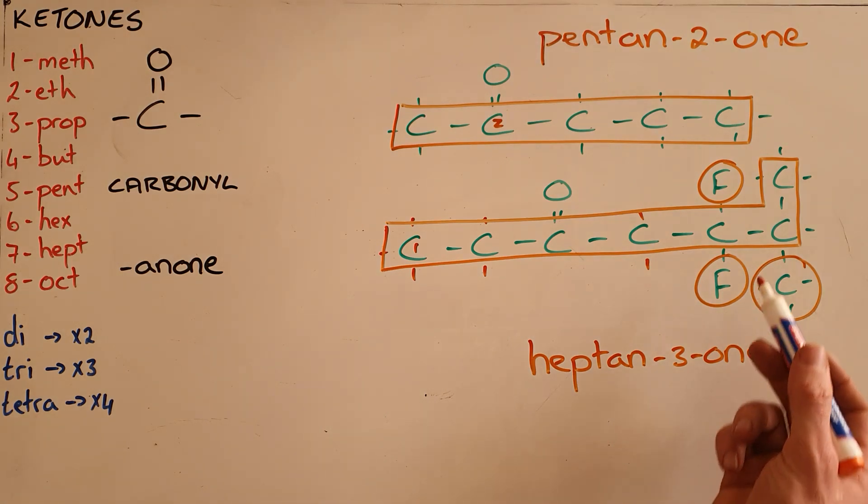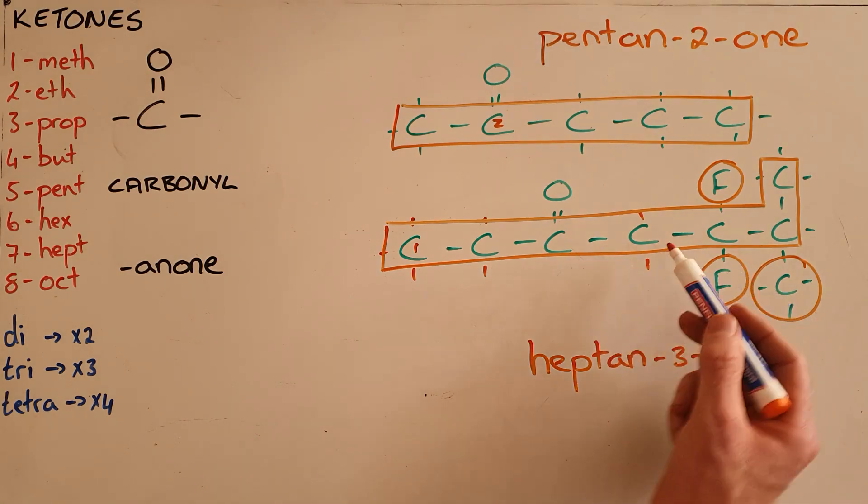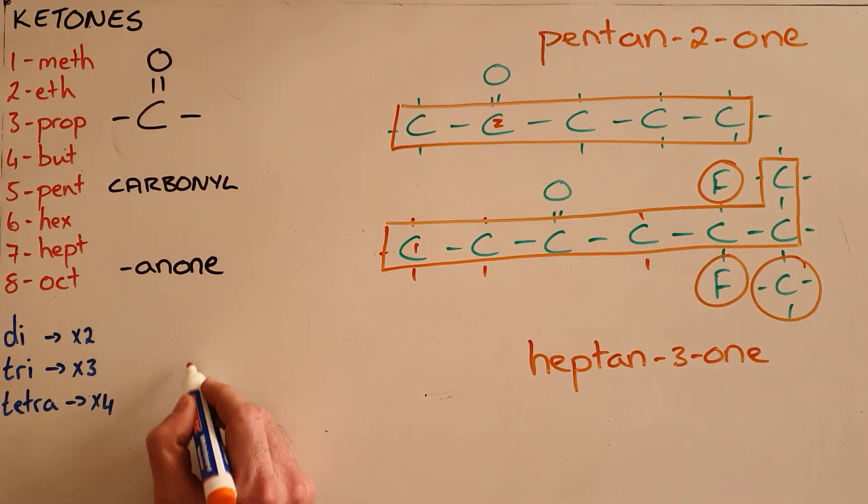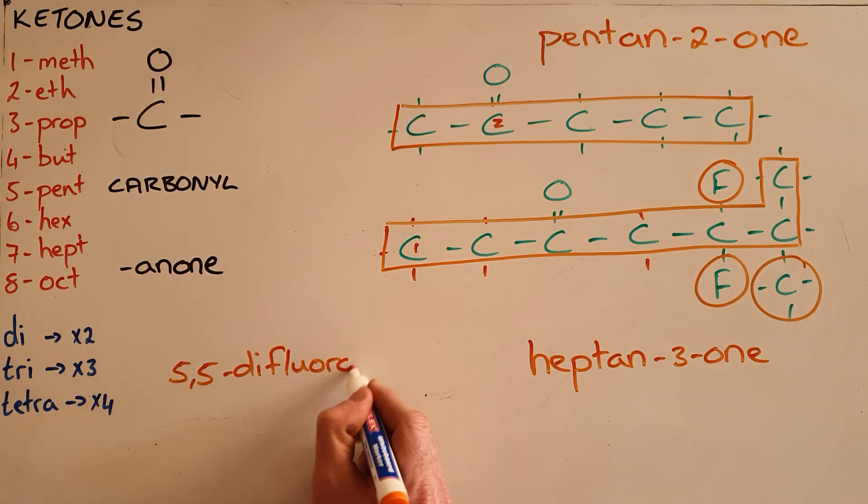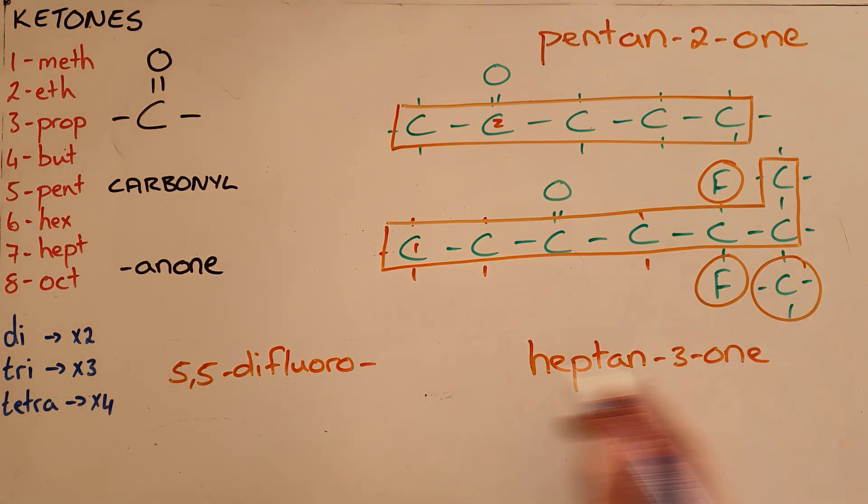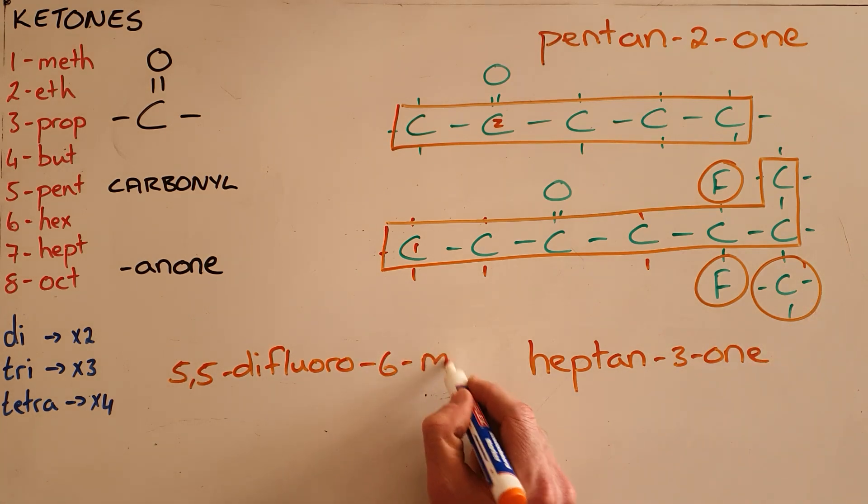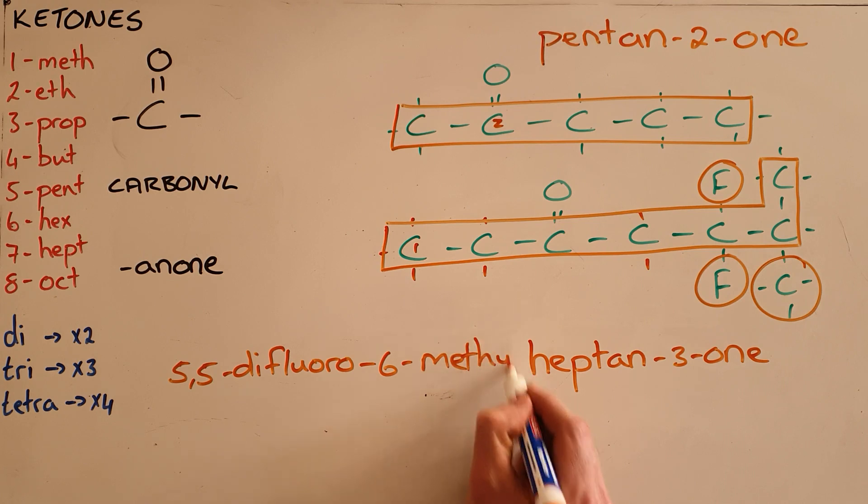Alphabetically, the fluoro branches should be placed first, and those fluoro branches are both on the fifth carbon, so we call this 5,5-difluoro to indicate that there are two fluorines both on the fifth carbon, and 6-methyl heptan-3-one.